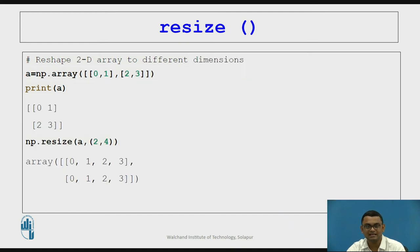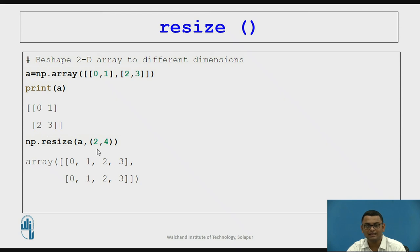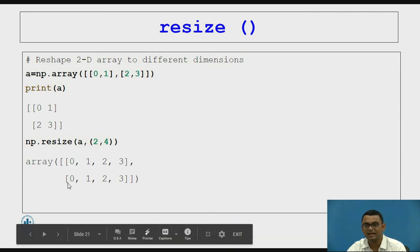Resize, on the other hand, reshapes an array to different dimensions and creates a new array, even if the element count differs. For example, resizing an array of 4 elements to 2 rows and 4 columns results in elements 0, 1, 2, 3 filling the first row, and a new row is created with the same elements repeated.